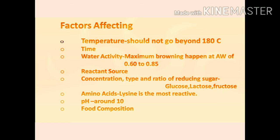pH is also a factor — it requires around pH 10, meaning it favours an alkaline medium. It is also important what kind of food composition or food products we are using when working with Maillard's reaction. These are the factors which affect maximum browning due to Maillard's reaction.